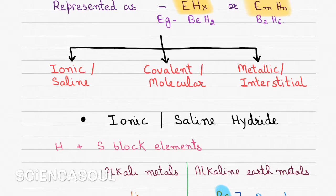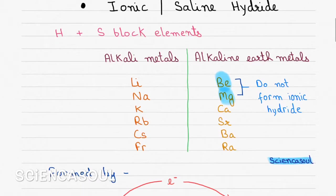Hydrides are of three types on the basis of their chemical and physical properties: ionic or saline hydrides, covalent or molecular hydride, and metallic or interstitial hydride.